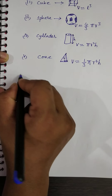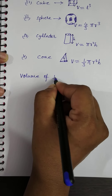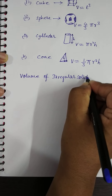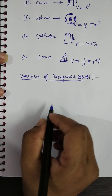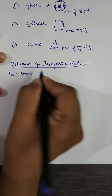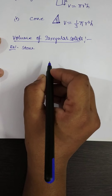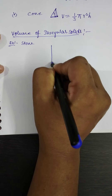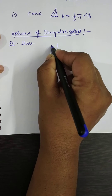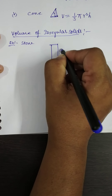Now, volume of irregular solids. How do we measure the volume of irregular solids? For example, I am taking a stone. By using a measuring jar, we can calculate the volume of irregular solids. Here I am taking one measuring jar which holds about 100 ml.